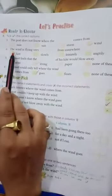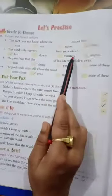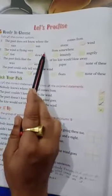Question number 2. The wind is flying very blank from somewhere. What is the right answer? Fast. The answer is fast. Fill it and tick here.